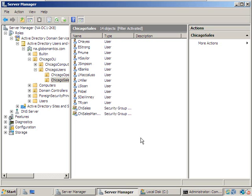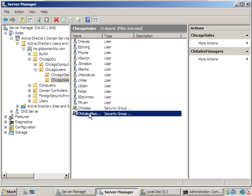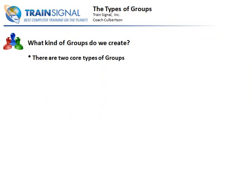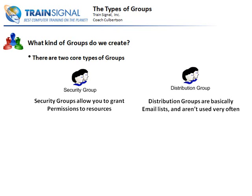Let's bounce back to the slides and talk about the different kinds of groups. We've seen two types of groups here. At this point we've seen what a security group is — it allows you to grant permissions to resources like shared folders and printers. There's also a distribution group, which is basically an email list. We don't use those very often because a security group can offer the same functionality.